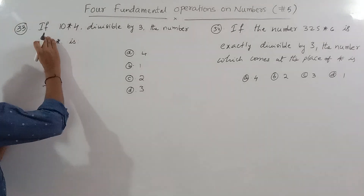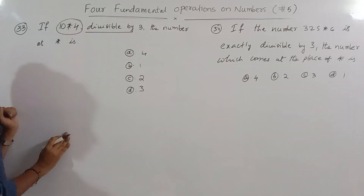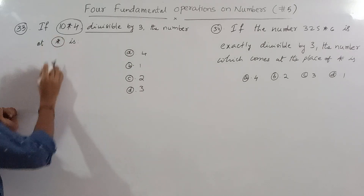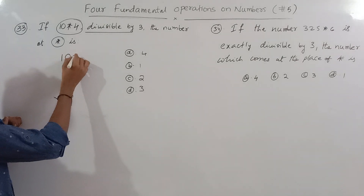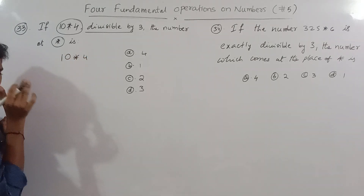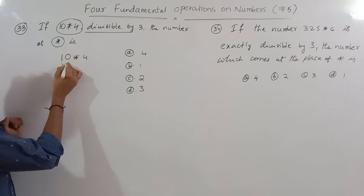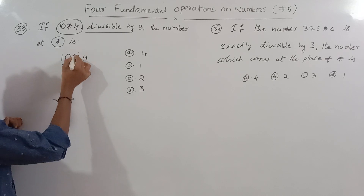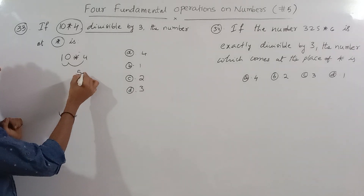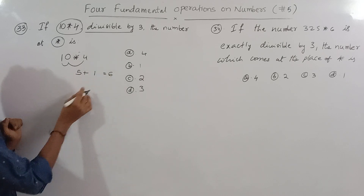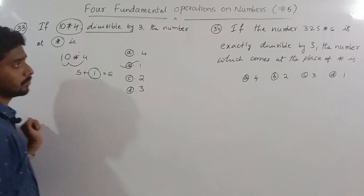If 1, 0, star, 4 is divisible by 3, what number goes at the star? Divisibility rule for 3: the sum of all digits must be a multiple of 3. Adding 1 plus 0 plus 4 is 5; for the sum to be a multiple of 3, we need to add the appropriate value for star. Adding 6 gives the next multiple of 3.